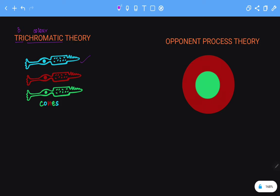These three colors are blue, red and green. Now according to this theory, all of us have three types of cones in our eye.